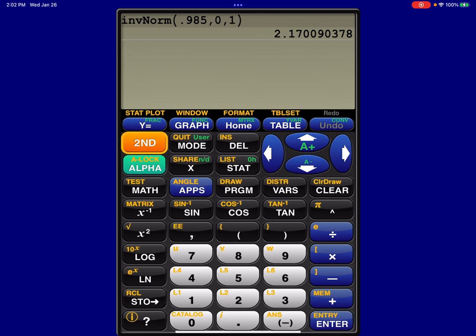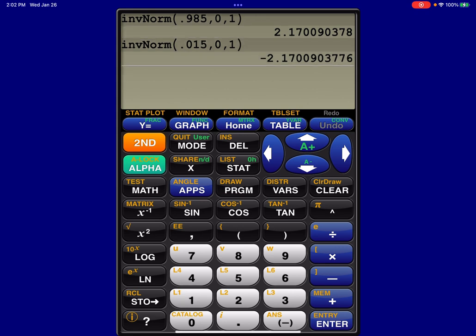And if you want to just explore this, if you would put in the other percentile, 0.015, you would have gotten the same number. It would have just been negative because it's on the other side of the z-axis. It's to the left of 0.